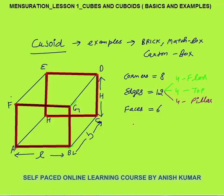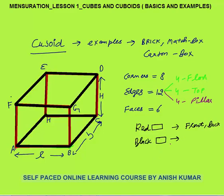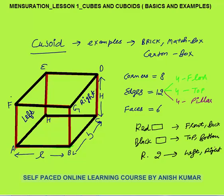How many faces do we have? We have 6 faces. The red rectangles are the front and back faces — they are congruent, exactly the same. The black rectangles are the top and bottom faces. The remaining 2 surfaces are left and right. So we have 6 faces, 12 edges, and 8 corners in every cuboid.